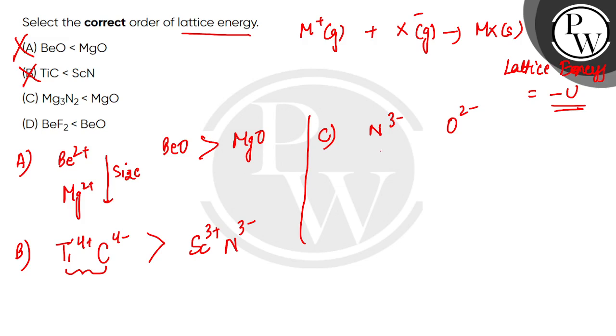When the charge is more, the lattice will be stronger. So Mg3N2 lattice will be stronger than MgO lattice.